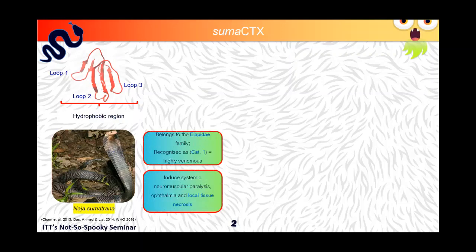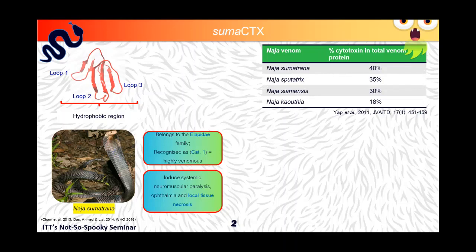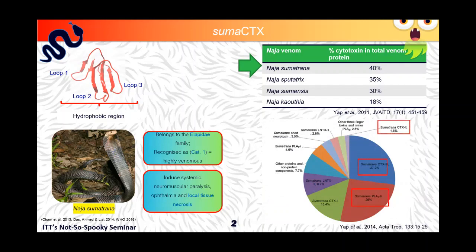So our interest in the Cobra species is Naja Sumatrana, which is commonly known as equatorial spitting Cobra. It is a highly venomous snake belonging to the elapidae family and it was recognized as category one, the highest medical importance venomous snake by WHO. Naja Sumatrana envenomation is clinically manifested as systemic neuromuscular paralysis and local tissue necrosis. A comparison between four different Southeast Asian Cobra venoms revealed that Naja Sumatrana venom has the highest percentage of CTX, while this was further proven by its venom proteome of about 44% consisting of CTX. Interesting to note that SUMA CTX actually has lower systemic bioavailability, indicating its higher binding affinity to the tissues, thus it plays an important role in causing local tissue necrosis.